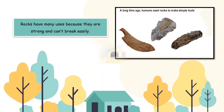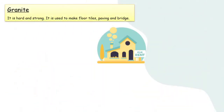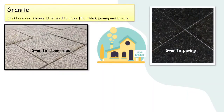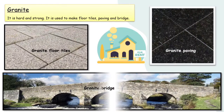Now let's talk about the uses of rocks based on their type. The first type is granite. Granite is hard and strong. It is used to make floor tiles, paving, and bridges. Here you can see examples of granite floor tiles, granite paving, and a granite bridge.